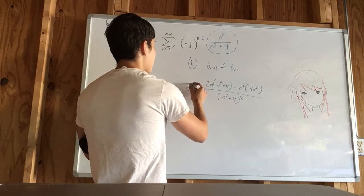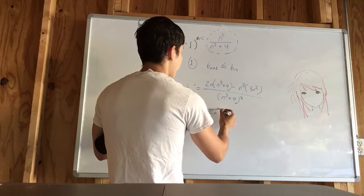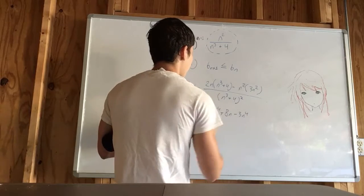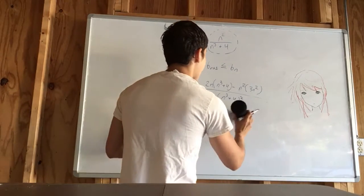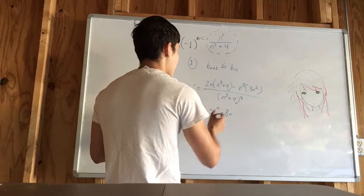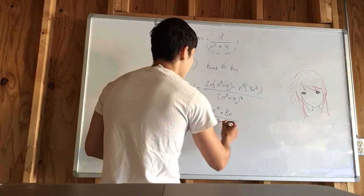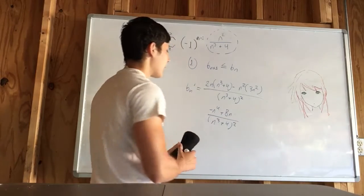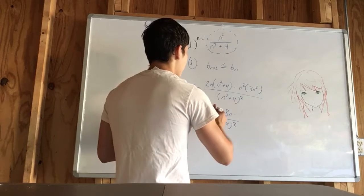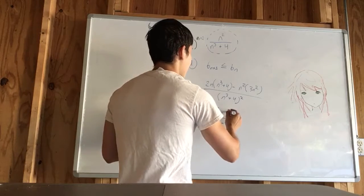We would have, and this is the derivative of b sub n. This would be 2n to the 4th plus 8n minus 3n to the 4th, which would give us negative n to the 4th plus 8n. In that numerator, then we would have n cubed plus 4 squared in the denominator. We could factor out an n. That would give us negative n cubed plus 8, with an n factored out.